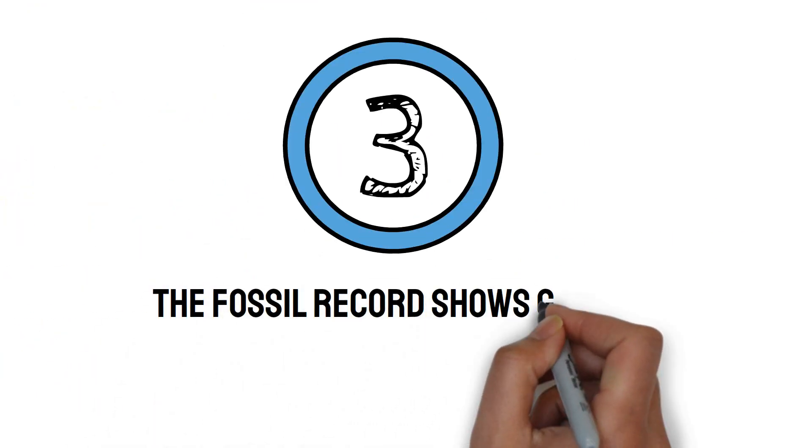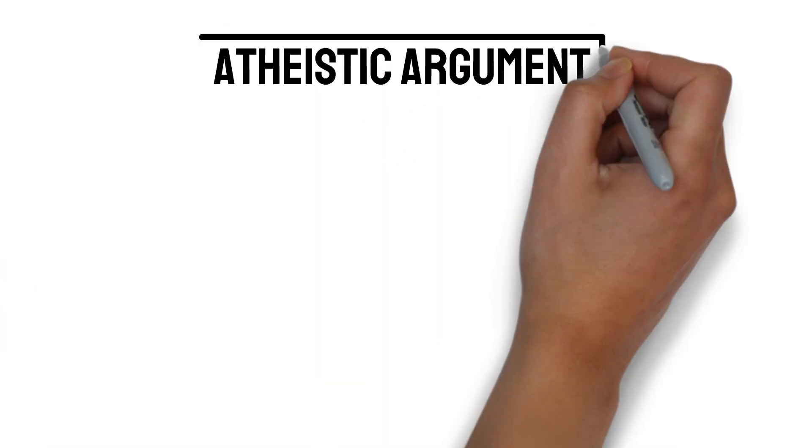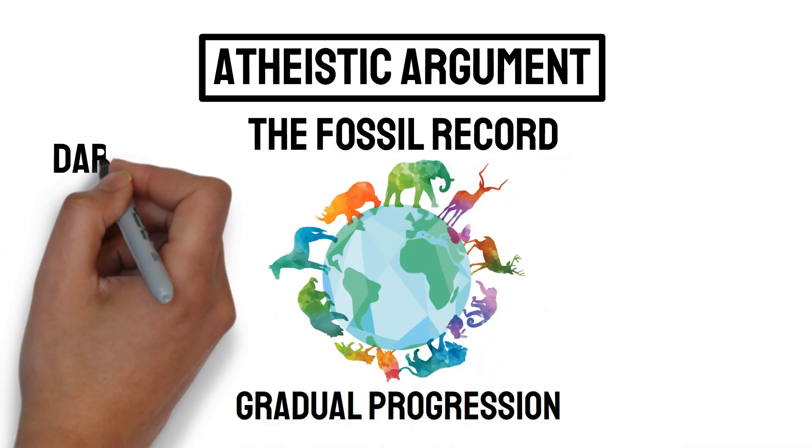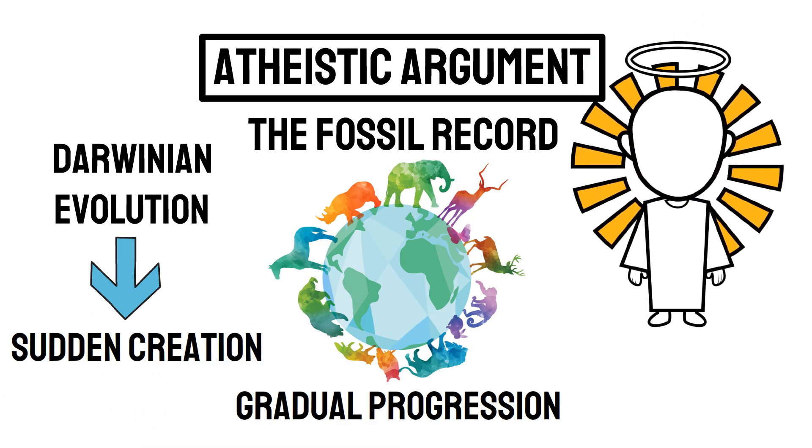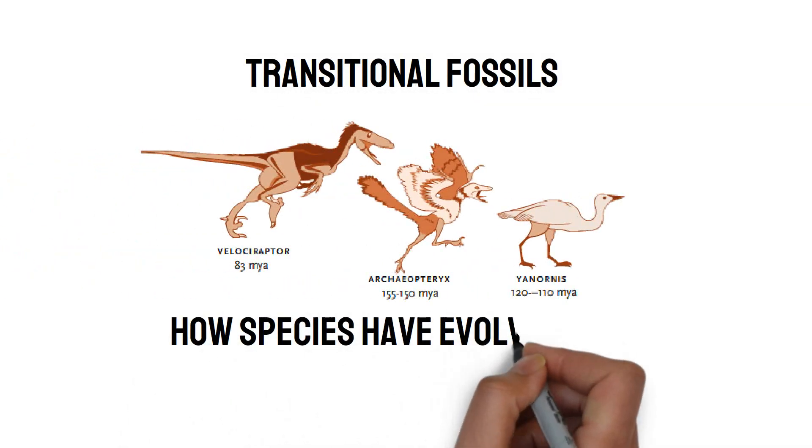Number three, the fossil records show gradual change, not sudden creation. The atheistic worldview will say that the fossil record shows a gradual progression of species over time, supporting Darwinian evolution, and refuting the idea of sudden creation by a divine being. Transitional fossils demonstrate how species have evolved from common ancestors.